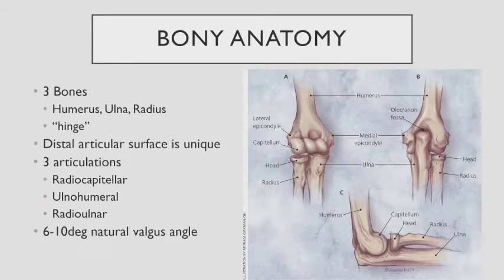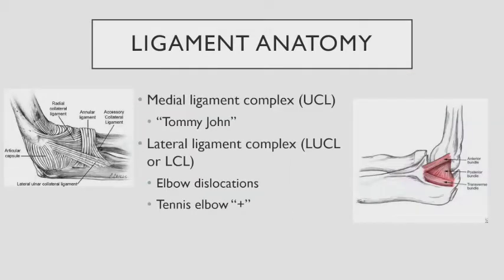The elbow has a natural valgus, what we call the carrying angle. If everyone extends their elbow, you'll find that some people's elbows hyperextend, some don't extend all the way, and some have more crooked or more straight elbows — everyone's a little different. The two primary ligament complexes are the lateral ligament complex and the medial ligament complex. The medial side is what people refer to in Tommy John surgery — the inner medial side with multiple bundles, relevant to pitchers and overhead athletes. The lateral collateral ligament complex, the LUCL or LCL, is where we see instability, dislocations, and conditions like PLRI — posterior lateral rotatory instability — which overlaps with tennis elbow, what I call tennis elbow plus.